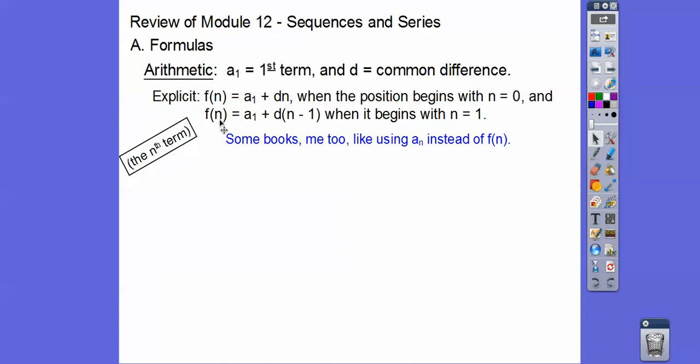My older books used a sub n instead of f(n). I also had a book that used t sub n, which I liked because it meant our nth term. But most books use a sub n, and your textbook uses f(n).